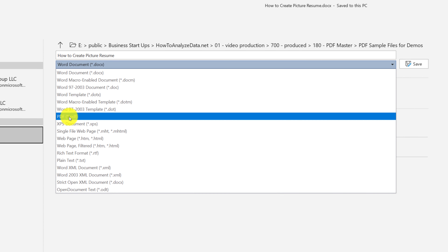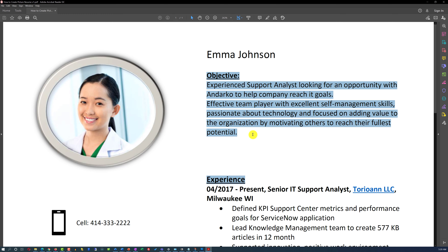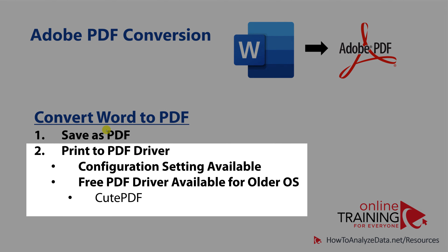The great thing about converting a Word document to PDF this way is that the created PDF will preserve all the qualities of the original Word document. The picture quality will remain the same and the formatting will match the original Microsoft Word file.